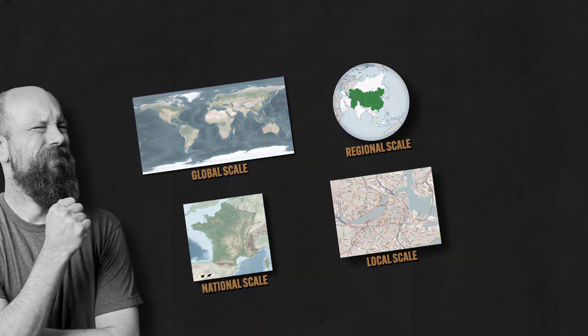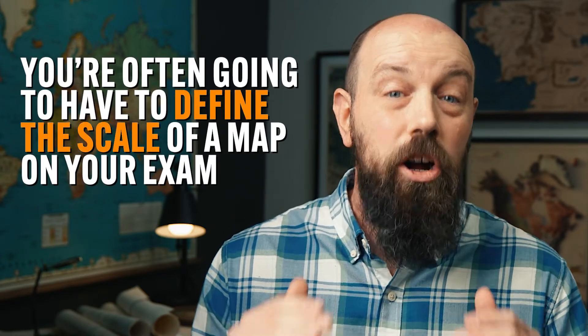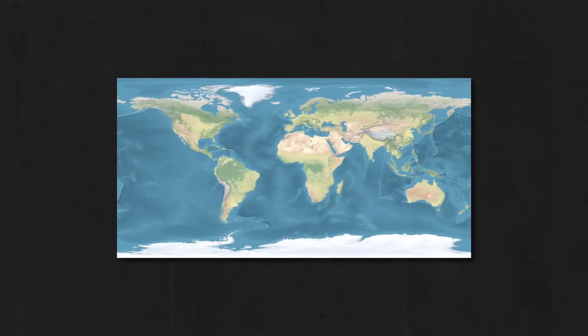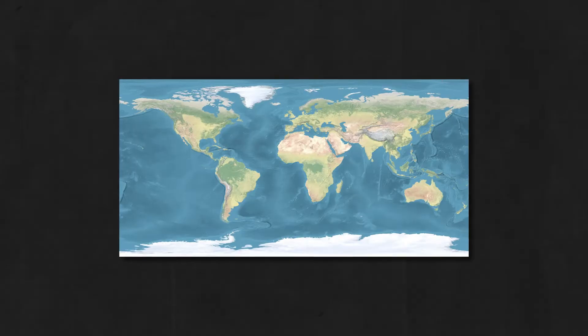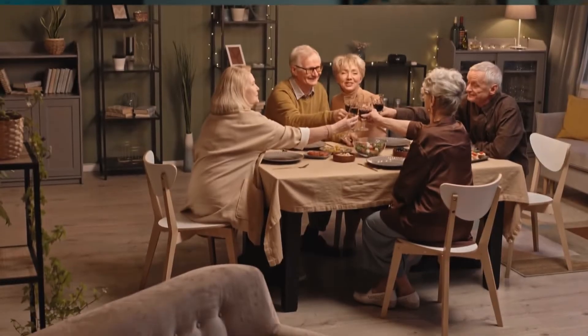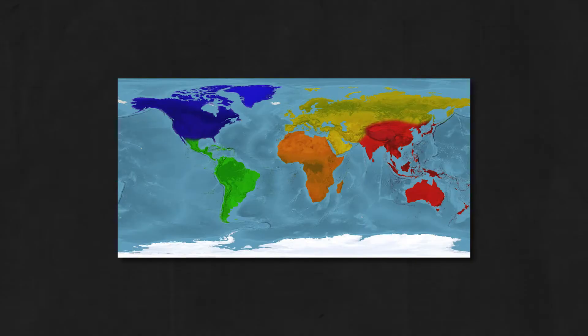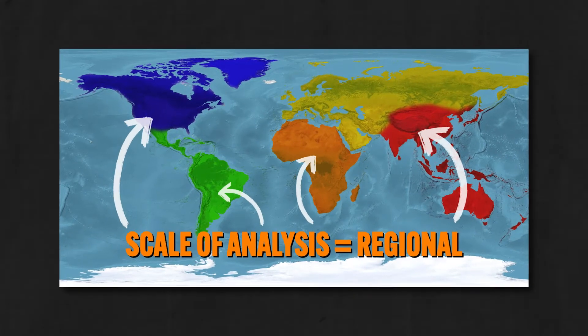But the AP human geography overlords aren't going to make things that easy. You're often going to have to define the scale of a map on your exam, and I cannot tell you how many students think they're answering correctly when in fact they are dead wrong — they're going to fail their test and go live in a van down by the river. So if you had to tell me what scale we're looking at here, I hope you'd say global, because that is correct. But let's take that same map and color in some regions — now what scale are we looking at? Even though the map shows us the whole world, the scale of analysis here is regional, which is what these shapes indicate.